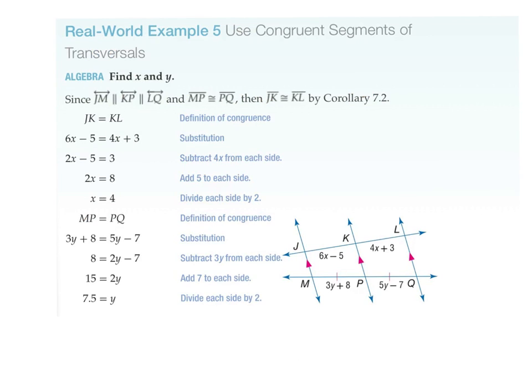So here's example 5 real world. Look at what you've got. First and foremost, you've got three parallel lines. But what else have you got? Two congruent segments. So if those two segments are congruent, so are these two guys. Can't have parallel lines and not have congruent segments.